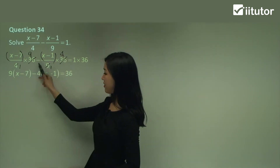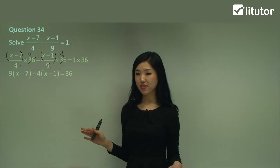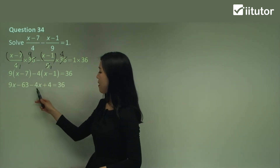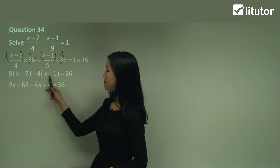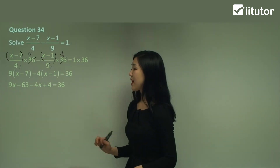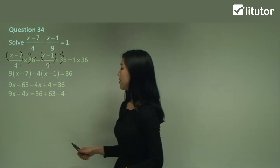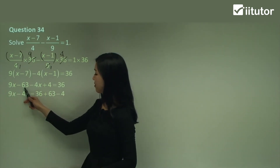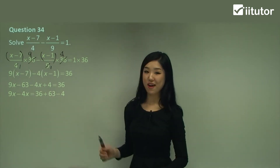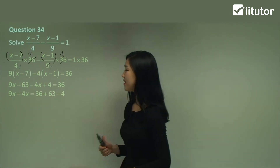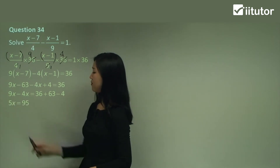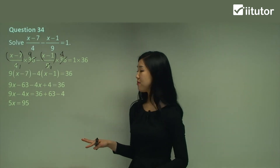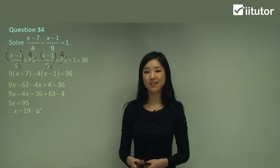Make sure the minus sign is here, and equals 36. Expand everything out: 9x minus 63, minus 4x — minus minus makes a plus — so plus 4. Gather your like terms on the left: 9x minus 4x on the left, and move the 63 and the 4 to the right-hand side by switching the signs. 9x minus 4x is 5x, which should be 95. Divide by 5 and you get x = 19.